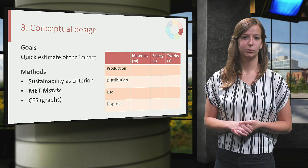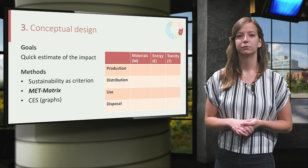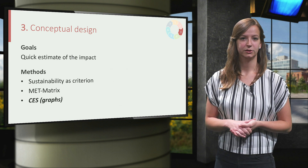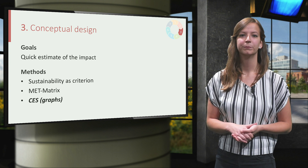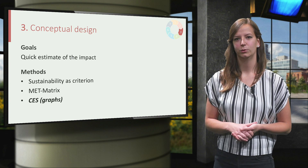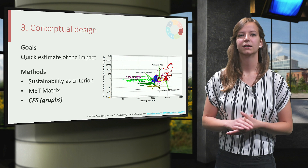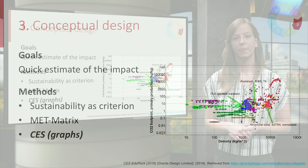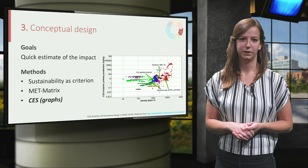This method is even more powerful when reliable data is used to substantiate the results. The software package Cambridge Engineering Selector, for some of you better known as CES-EDUPACK, could be used as a source. In the eco-design and sustainability databases of this software package a lot of sustainability-related data can be found. This data, or a combination of data, can be plotted to compare materials. This example shows the CO2 footprint in the production phase plotted against the density of the materials. Use the raw data and the graphs to judge and compare your concepts.